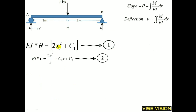Equation 1 is used for finding the slope and equation 2 is used for finding the deflection for this type of beam in the AC region. We are solving only the AC region now.